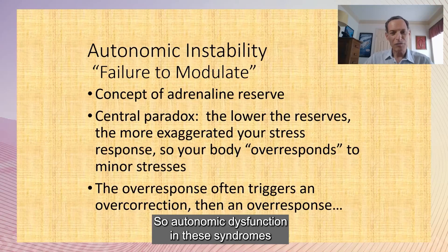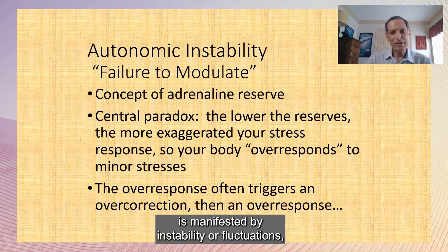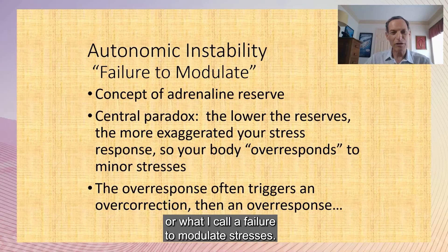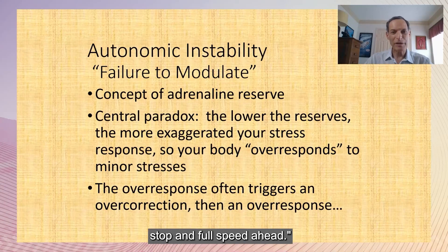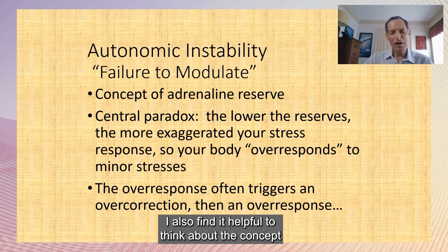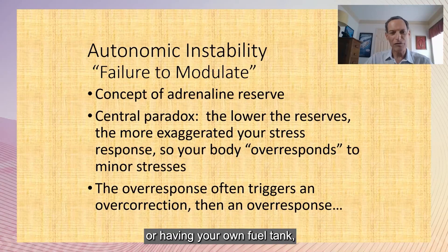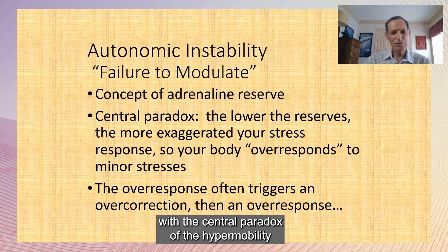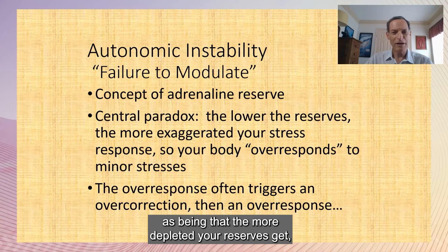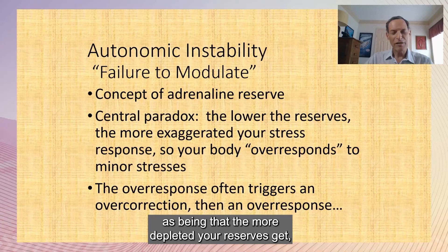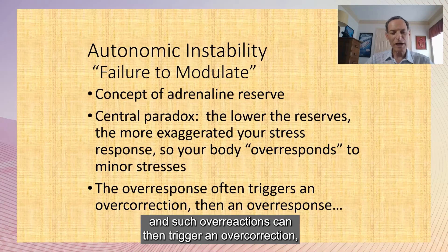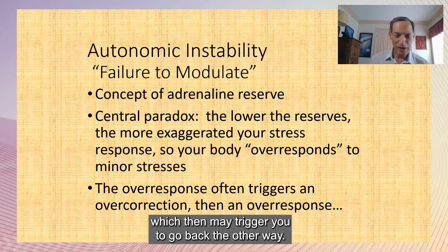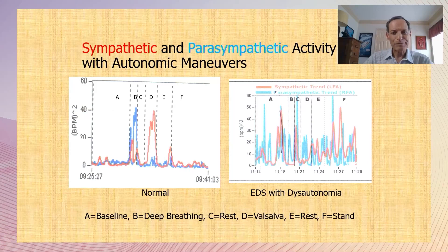Autonomic dysfunction in these syndromes is manifested by instability or fluctuations — what I call a failure to modulate stresses. Some patients say they only have two speeds: stop and full speed ahead. The central paradox of hypermobility-associated dysautonomia is that the more depleted your reserves get, the more your body overreacts to stress, and such overreactions can trigger an overcorrection.